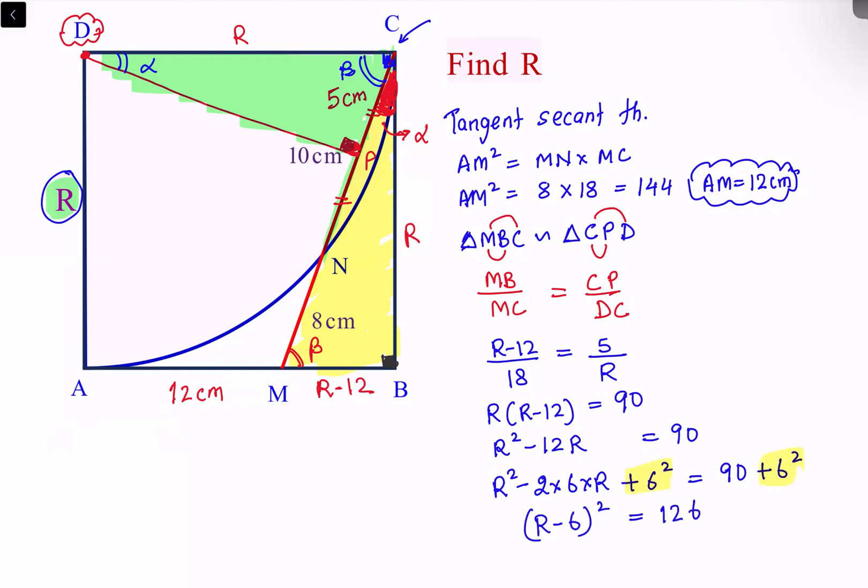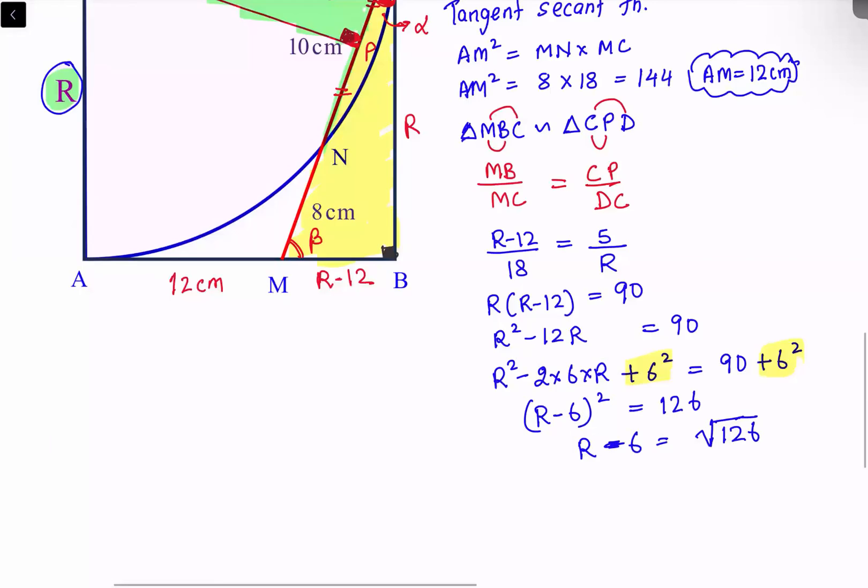We'll solve it to get the value of R. So R minus 6 is the square root of 126. 126 is a multiple of 9, so R is 6 plus 3 root 14 centimeters. And that's our answer.